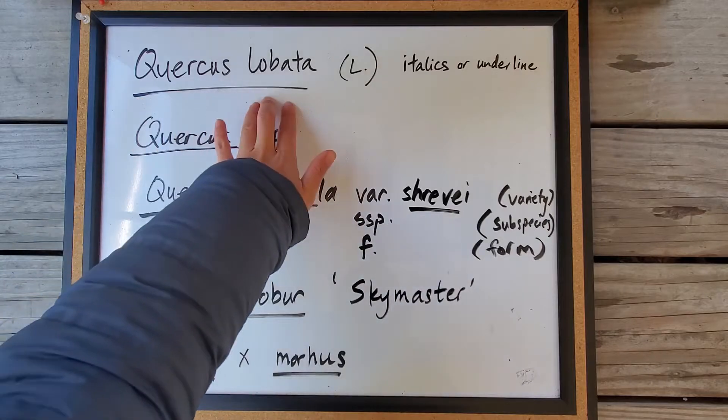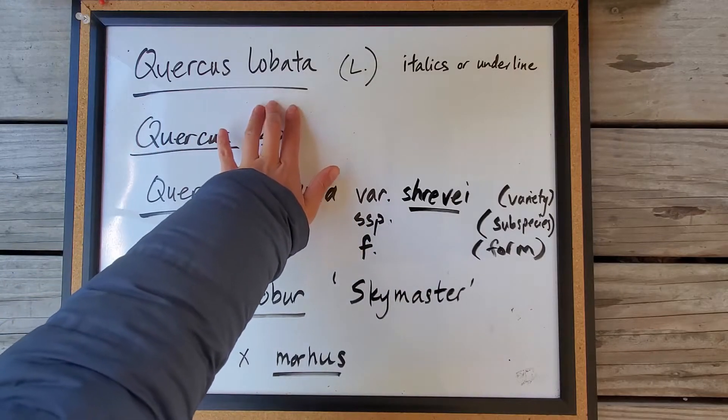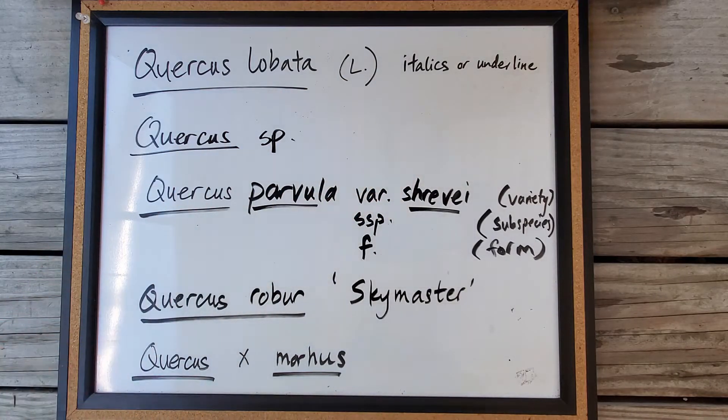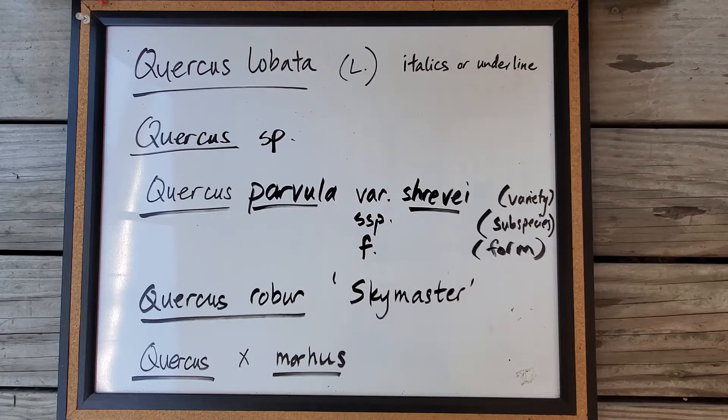So Quercus lobata is a species, and sometimes you'll find an initial or a name after the scientific name. That's just a person who gets credit for the name.